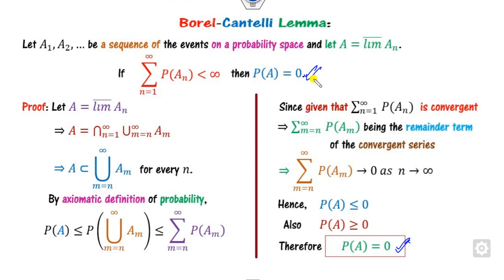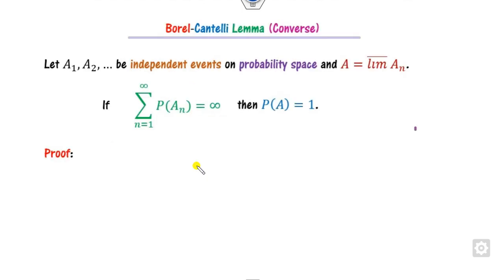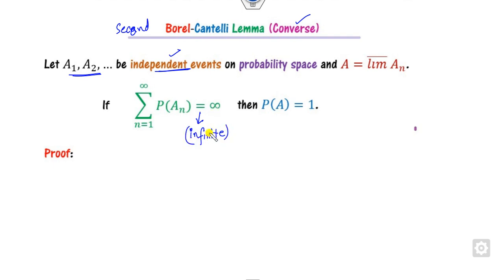Since probability can never be negative, it is always greater than or equal to 0. Therefore we conclude that P(A) = 0. That completes the proof of the Borel-Cantelli lemma. One important note: this lemma does not require any independence condition on the events A_i. The converse — the second Borel-Cantelli lemma — requires the additional condition that the events are independent, and if the sum of their probabilities is infinite, then P(A) = 1.